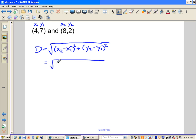And I still need the square root sign. Well, X2, well there it is, 8. Subtract. X1 is 4 squared, plus, take my second Y. That's 2, subtract, there's my Y1, 7 squared.